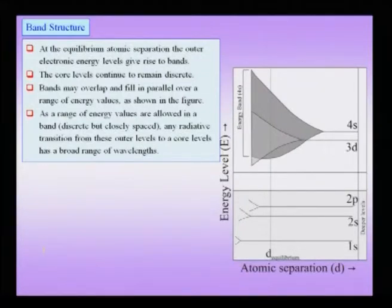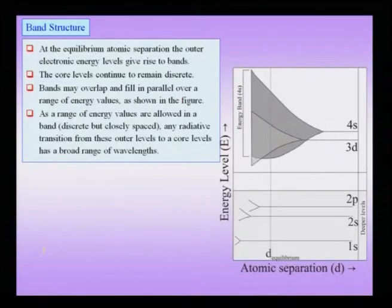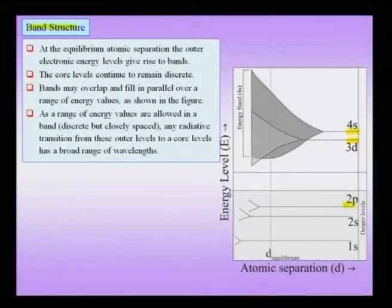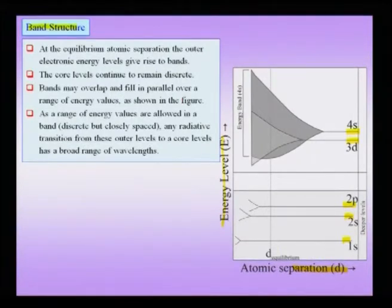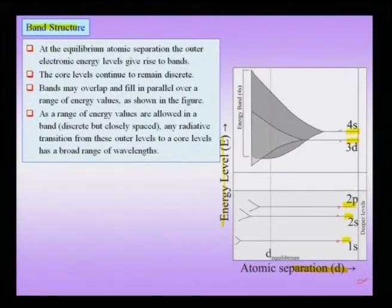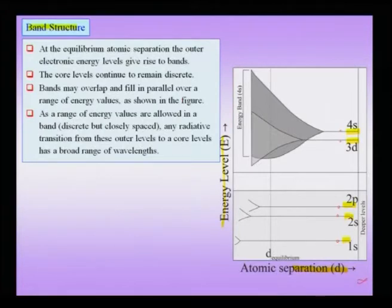The free electron theory cannot explain all concepts — it is a simplified theory. The more rigorous way to understand conduction properties and electronic structure is what is known as the band structure. In a simple physical understanding of the band structure: when atoms are very far apart, their electronic energy levels do not interact and are essentially discrete. As atoms come closer, the outermost energy levels start to overlap and, given Pauli's exclusion principle, they spread into a band. For example, the 3d electrons split into a band, and the 4s electrons form another band, and these bands belong to the entire solid, not to individual atoms.